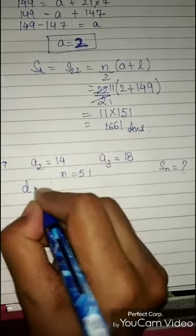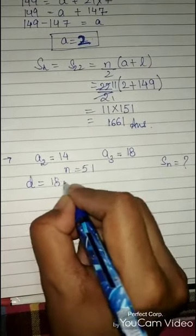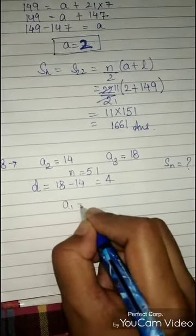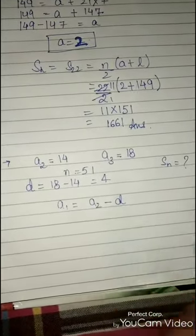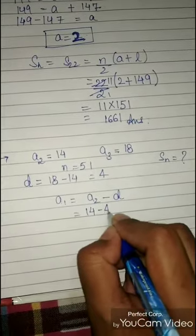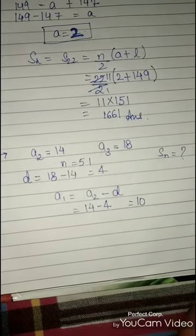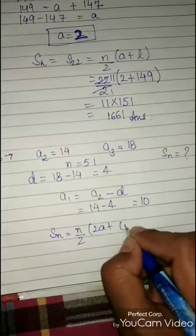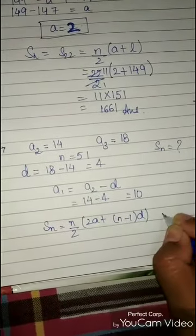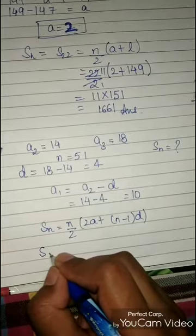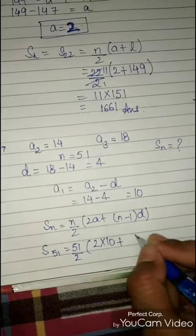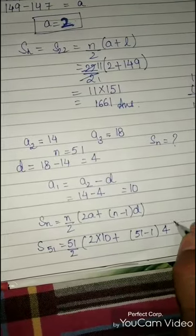We can find d = a3 − a2 = 18 − 14 = 4. Then a1 = a2 − d = 14 − 4 = 10. Now applying the formula: S51 = 51/2 × (2×10 + (51−1)×4) = 51/2 × (20 + 50×4).